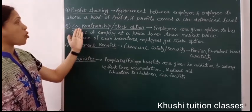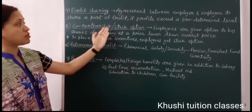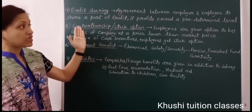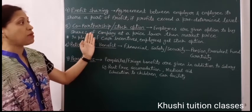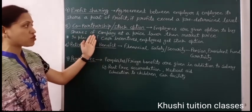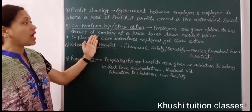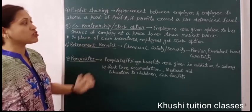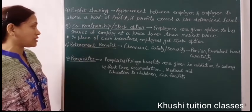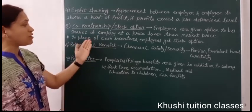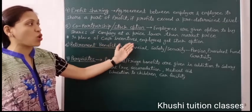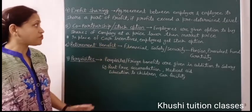The fifth financial incentive is co-partnership or stock option. Under this scheme, employees are given the option to buy shares of the company at a price lower than the market price. In place of cash incentives, employees get a stock option.